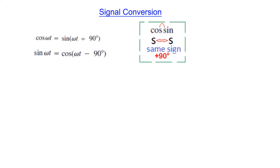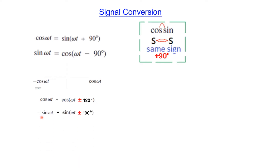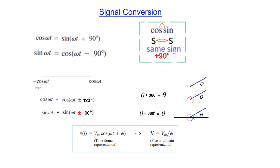The next part is converting a negative number to a positive number: negative cos(ωt) to positive cos(ωt). To go to the positive side we add plus 180 degrees or subtract 180 degrees. So: −cos(ωt) = cos(ωt ± 180°), and similarly −sin(ωt) = sin(ωt ± 180°). Also, if you add 360 to any angle θ, you complete a full circuit and return to the same point, so θ + 360° = θ.